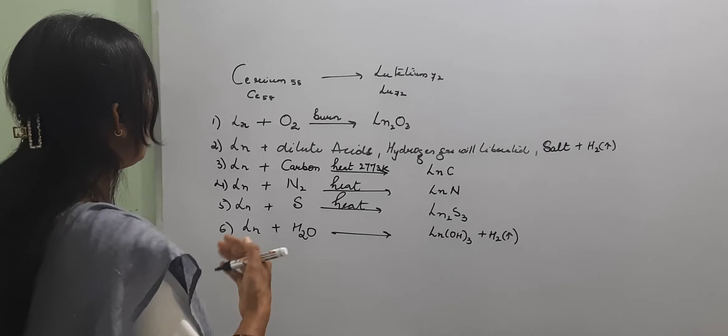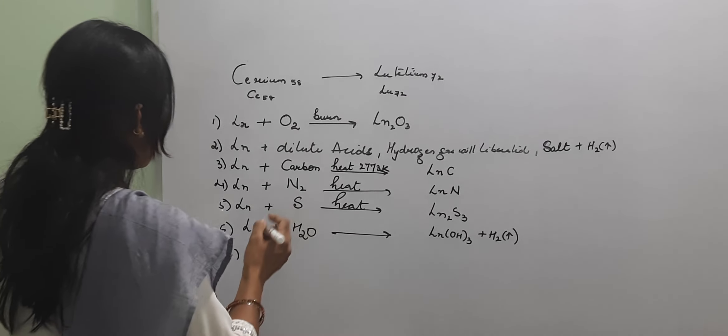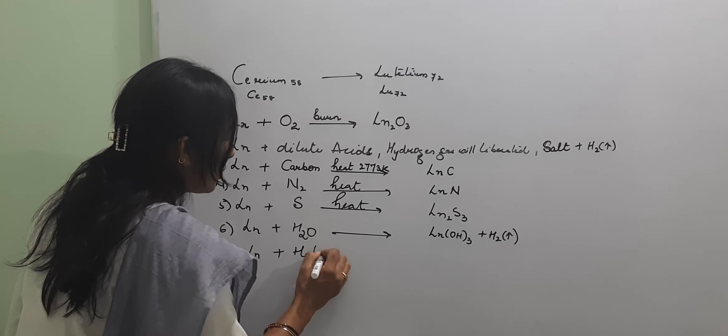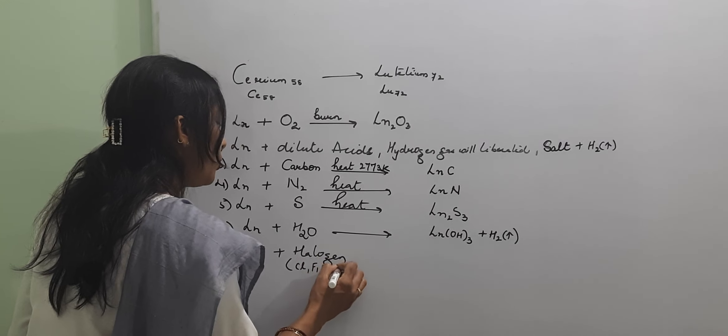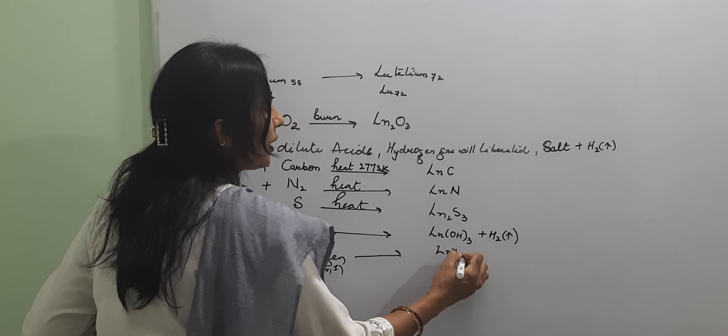When lanthanides react with halogens, like Cl, F, Br, I, and so on, we are getting lanthanide trihalides.